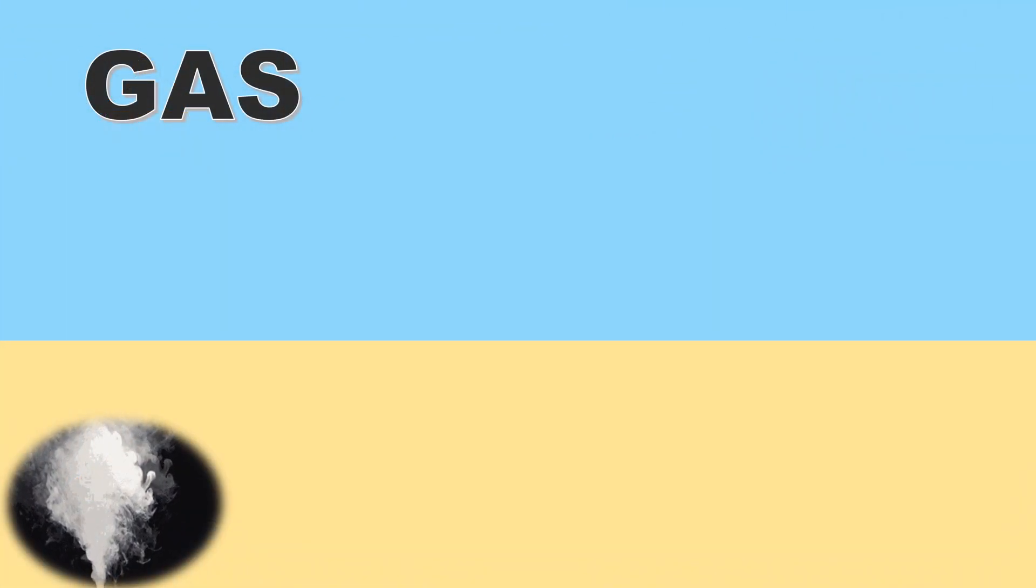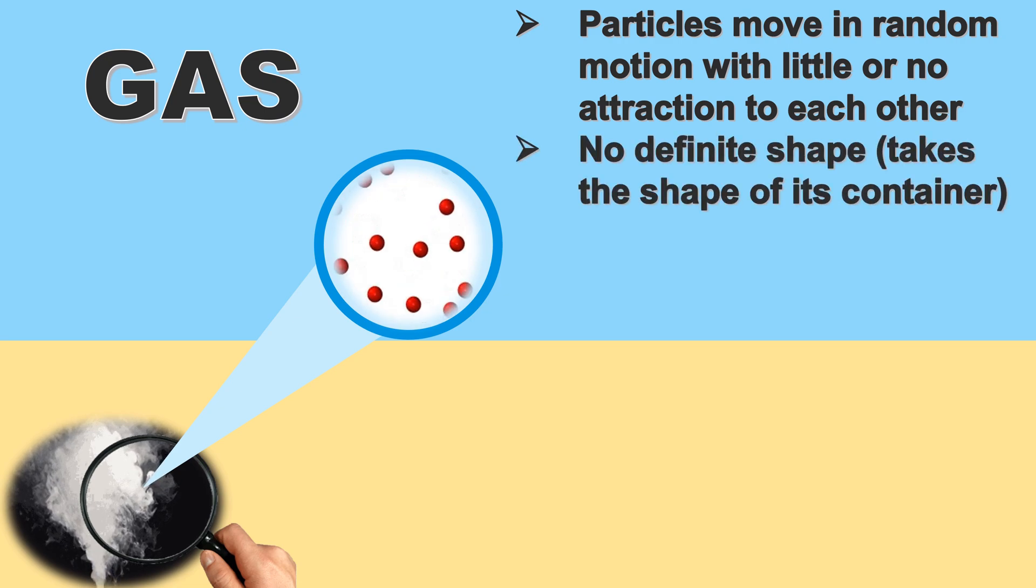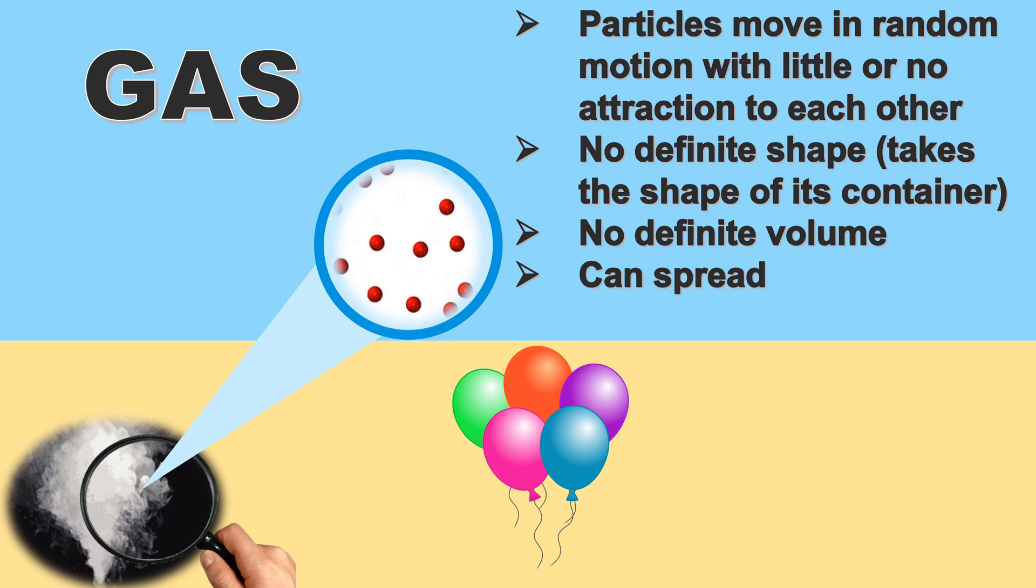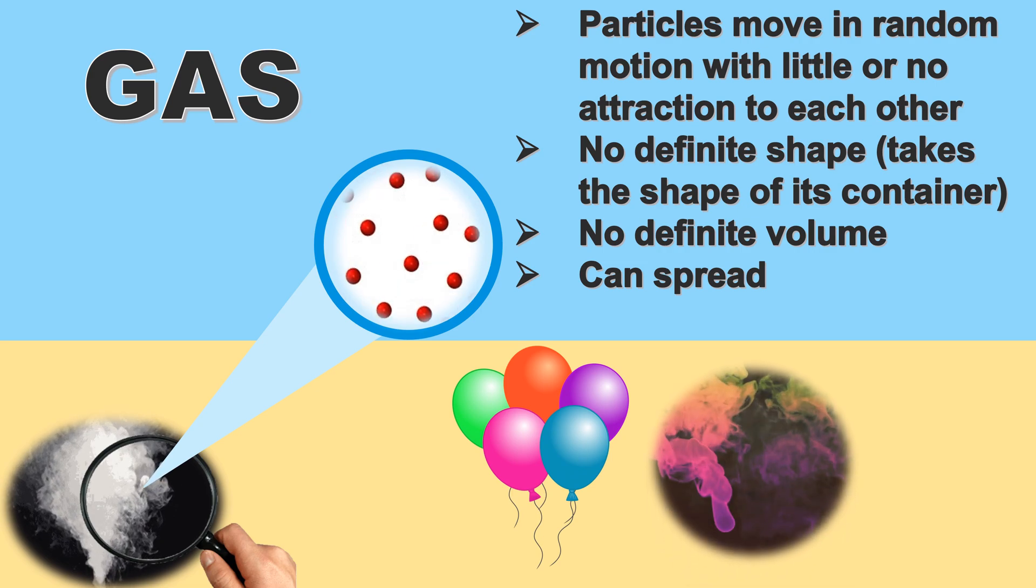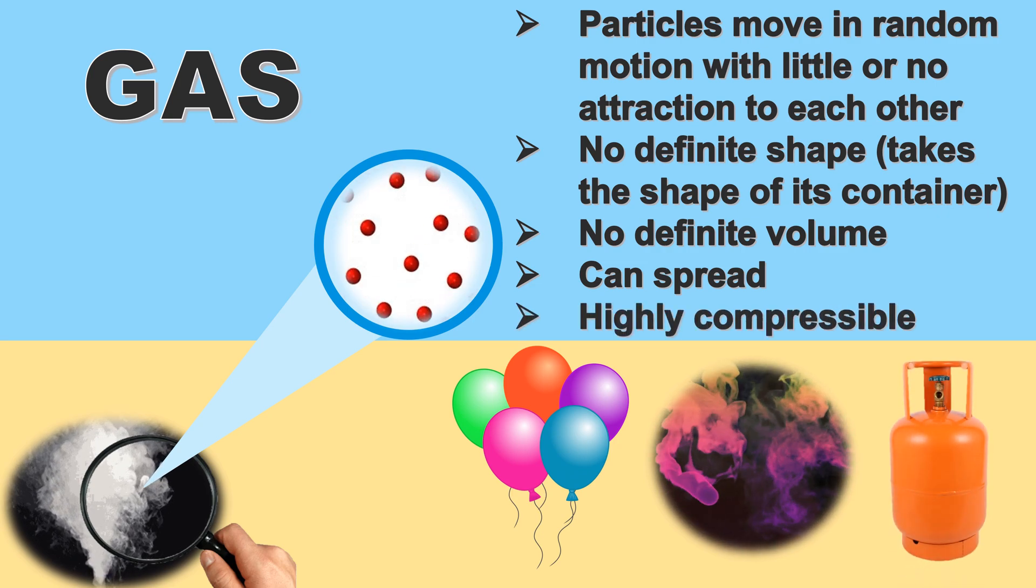Gas. Smoke is an example of gas. Particles of gases move in random motion with little or no attraction to each other, because molecules of gases are far from each other. They constantly move in all directions. That's the reason why gas has no definite shape. It takes the shape of its containers, like in the balloon. Gas has no definite volume. It can spread or has the ability to diffuse. It is highly compressible or it has the ability to be compressed.